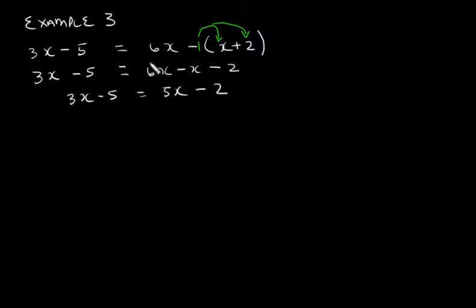So on the right hand side we added our like terms. 6x minus x is 5x and we have negative 2 which we carry down. So we have 3x - 5 = 5x - 2. But remember we want to separate our variables from our constants. So we want one on the left and one on the right.